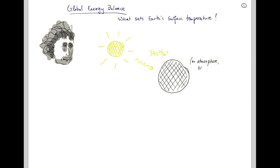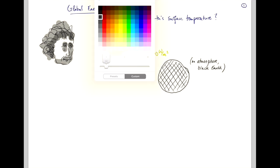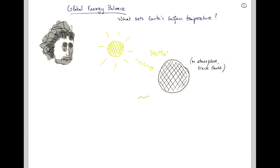And that our Earth is totally black, which means that Earth absorbs all the 340 watts per meter squared.